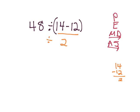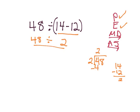I'm going to bring everything else down. I've done my parentheses. Are there any exponents? No. Multiplication or division — all I have is division, so now I'm going to do 48 divided by 2. 2 goes into 4 two times; 2 times 2 is 4, subtract and get 0. Bring down my 8 — 2 goes into 8 four times; 4 times 2 is 8, subtract and get 0. So my answer is 24.